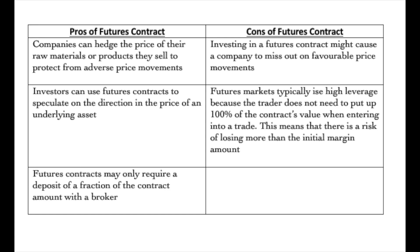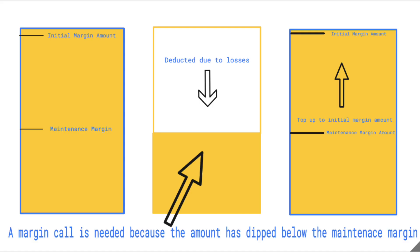Instead of paying 100% of a contract's value up front, the broker will require an initial margin amount. This amount will vary depending on the size of a contract and the credit worthiness of the investor. The exchange where the futures trade takes place will determine whether the contract is for physical delivery or if it can be cash settled.